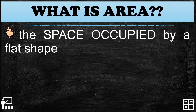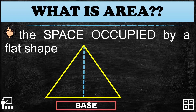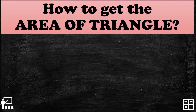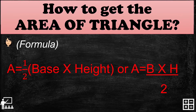In this lesson I will show you the area of a triangle. The parts of this polygon are the base and the height. To find the area of a triangle, we must use a formula. The formula is one half times the base times the height, or A equals base times height over two.